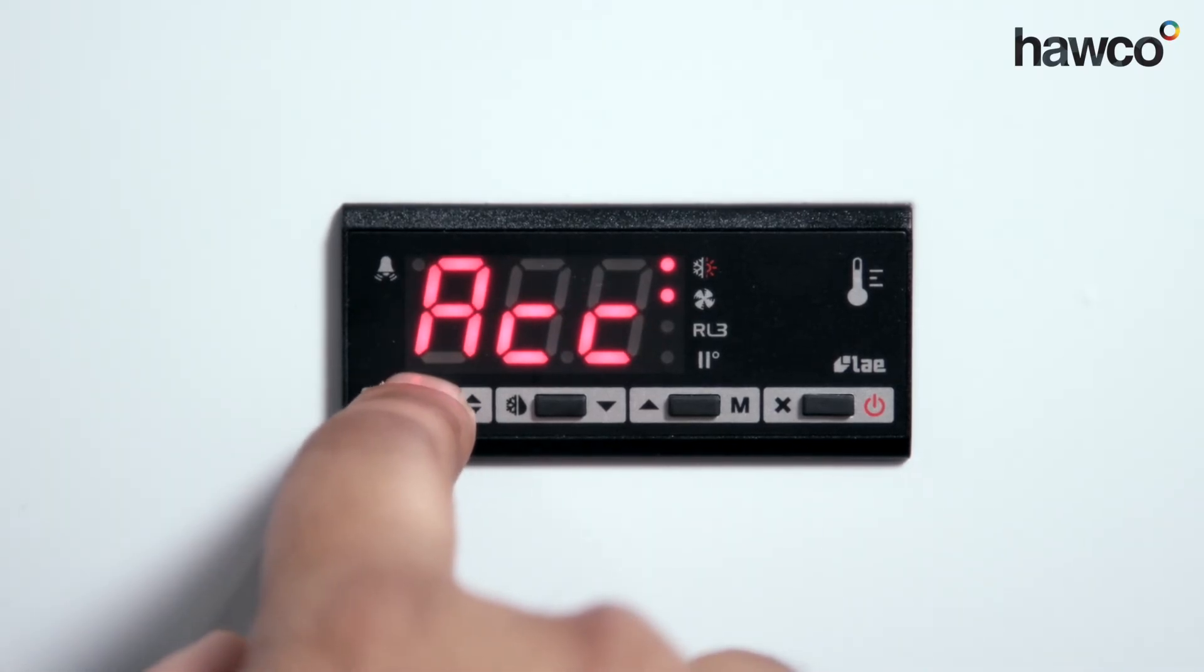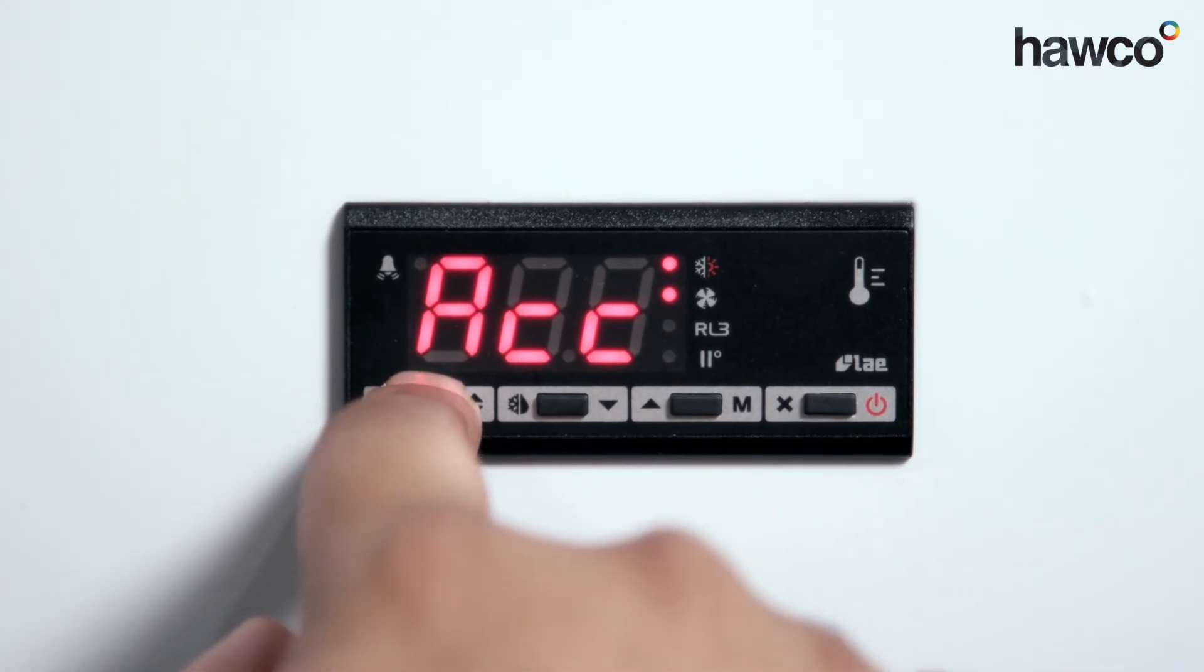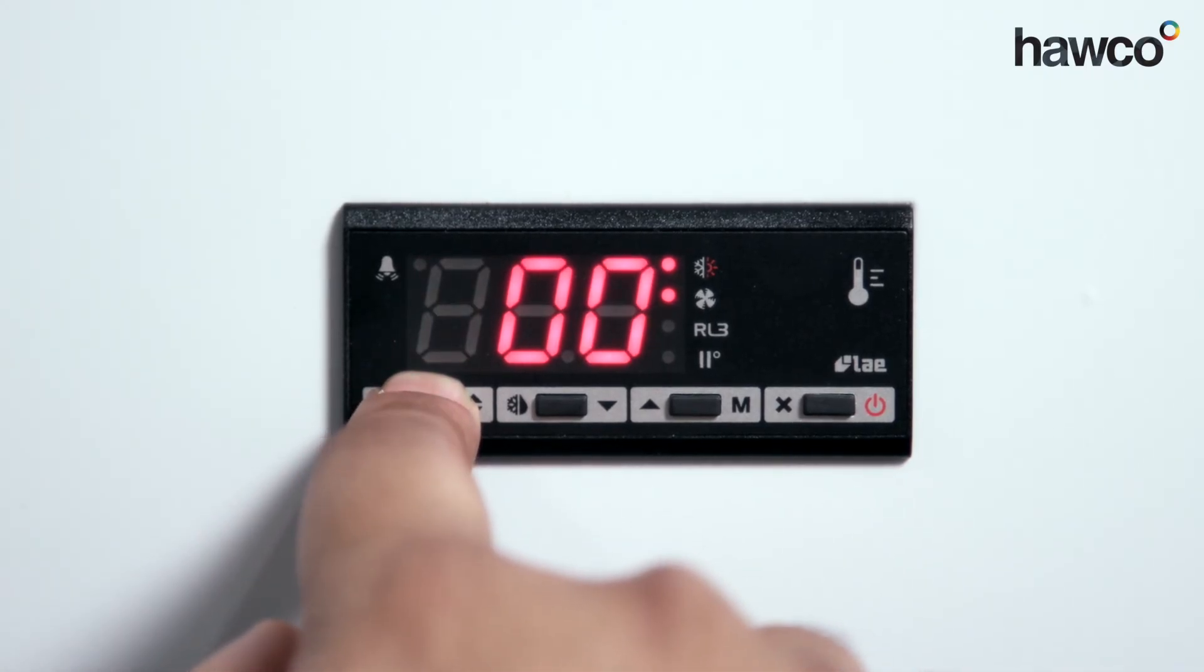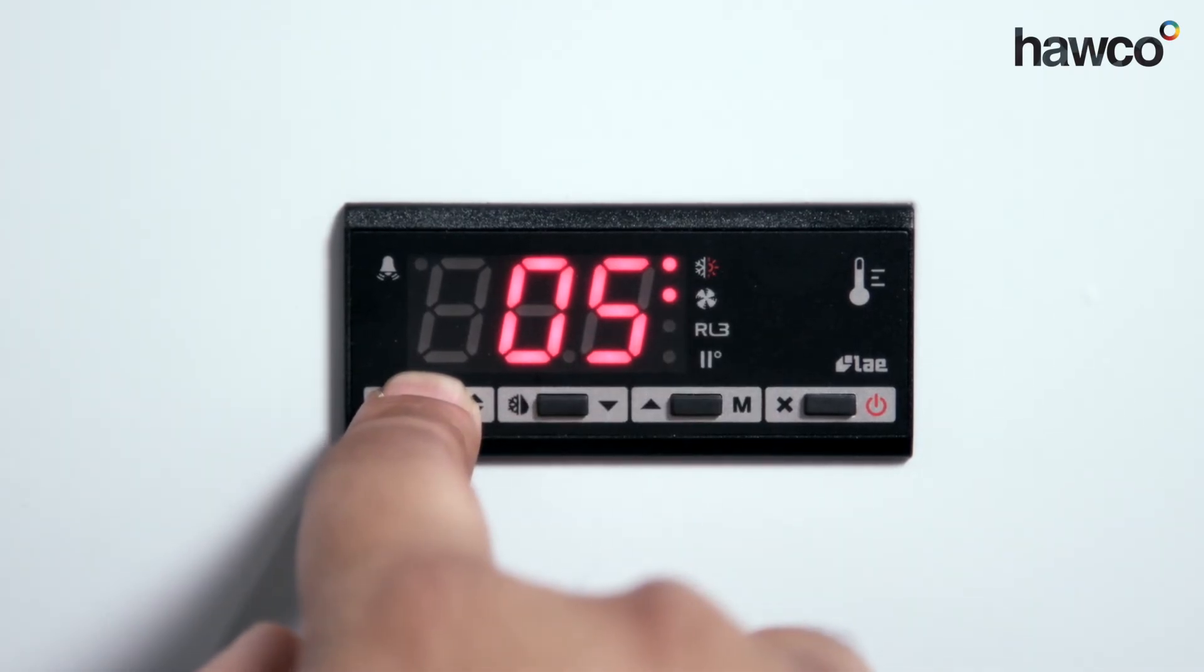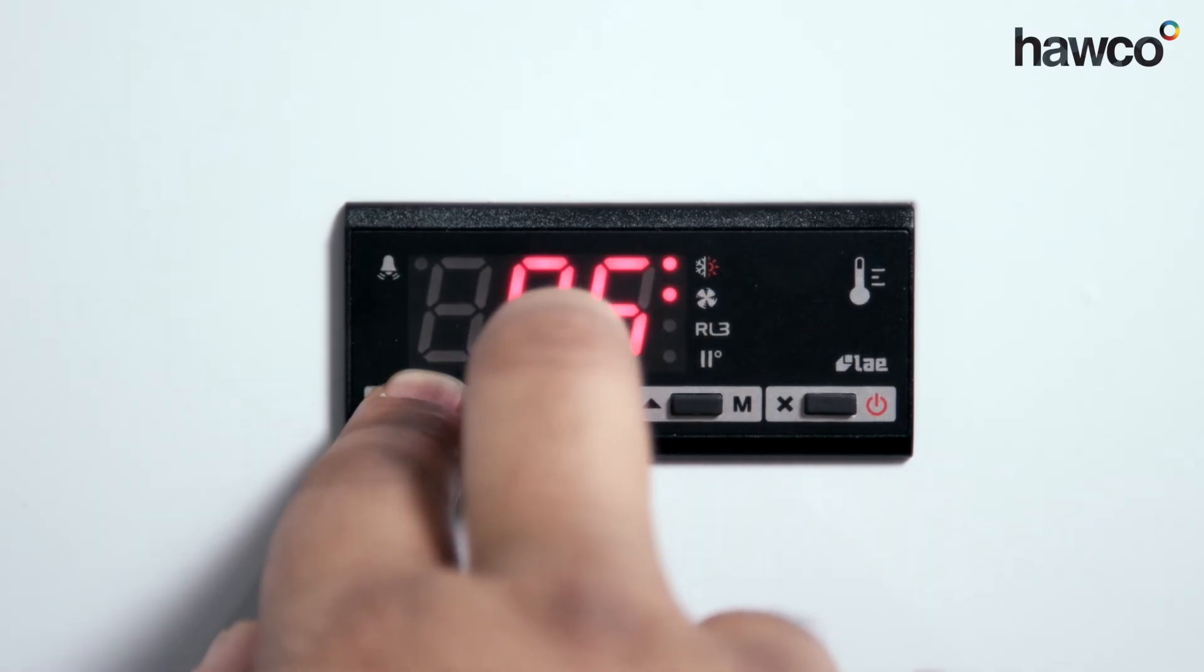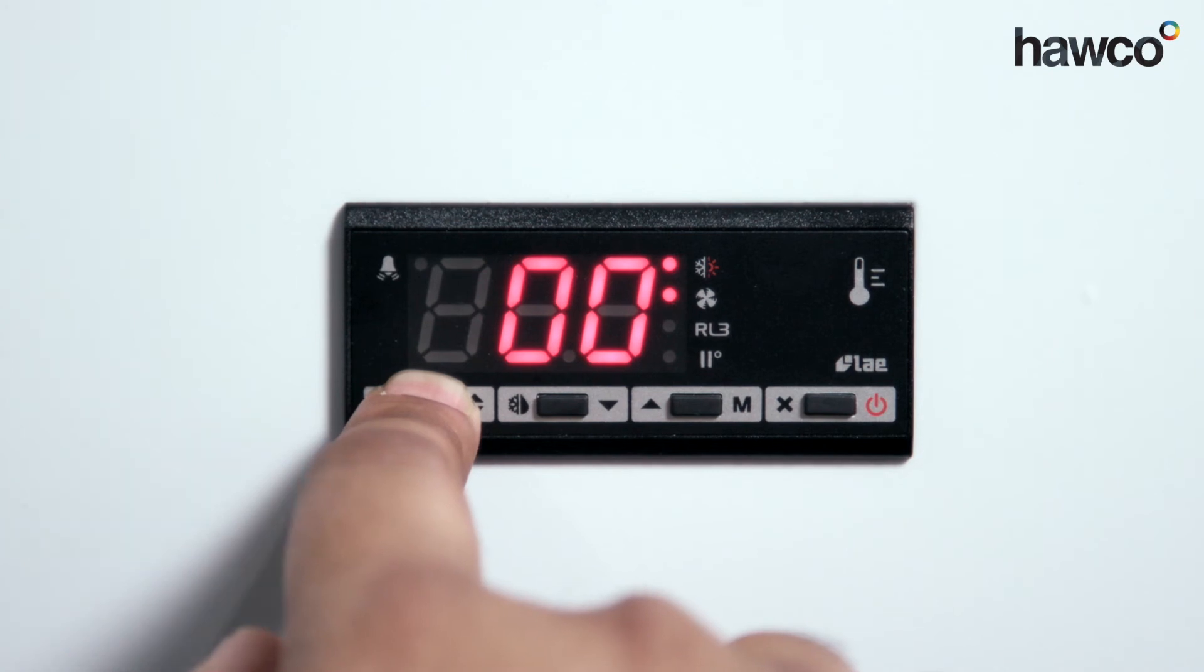ACC is for condenser clean. This gives you an alarm every so many weeks as per reset, and the display will show CLN. Once this happens, you can take this down to zero to show it's never going to come along again.